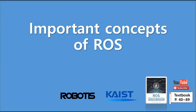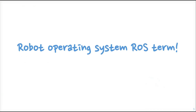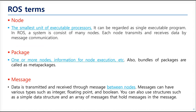Hello, this is Chapter 4. This chapter talks about very important concepts of ROS. If you want to use ROS well, you should get a deep understanding here. We'll talk about some keywords in ROS and the structure. We'll also learn what message communication is and how communication can be carried out, including names, coordinate transformation, client libraries, communication between heterogeneous devices, and the structure of ROS files and folders.